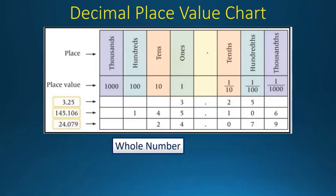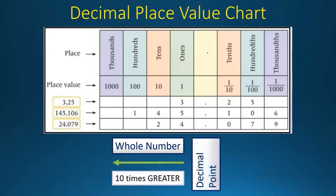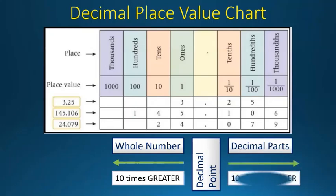The whole numbers — such as 3, 1, 4, 5, and 2, 4 — are the whole number parts, which are always ten times greater as you move left. Then we have the decimal point, and then we have the decimal parts, which are always ten times smaller as you move right.